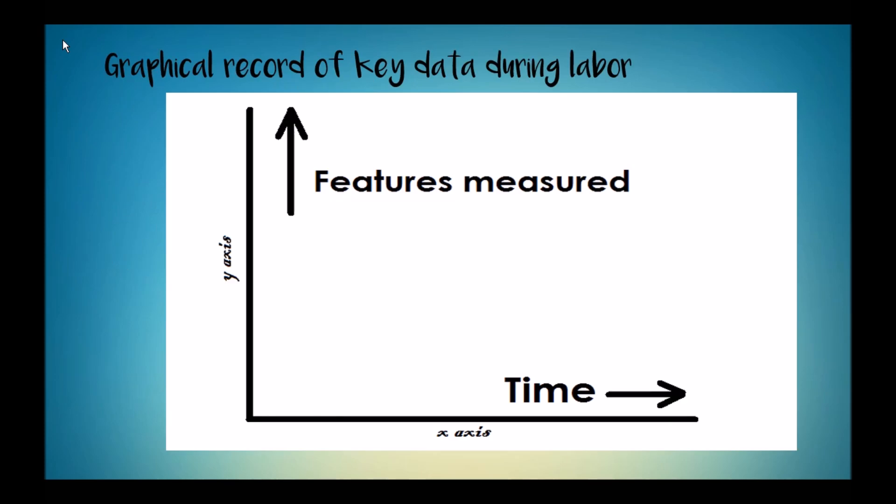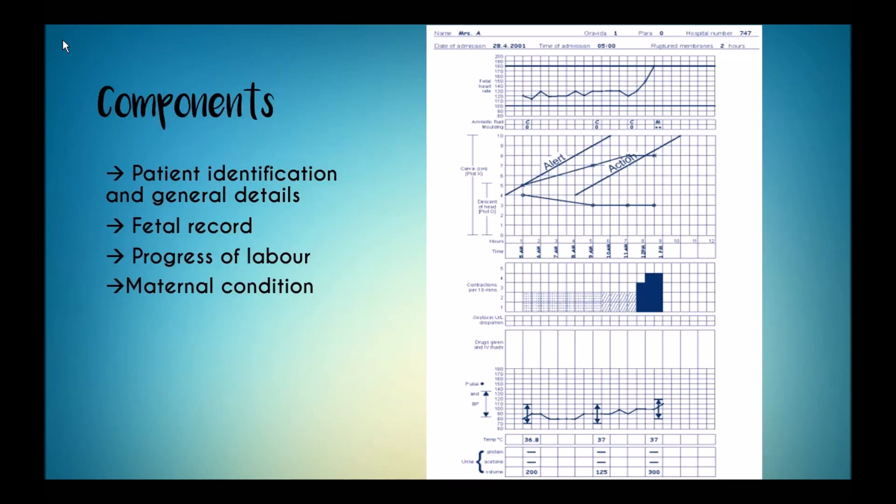All the key data during labor is plotted on the y-axis against time on the x-axis. The components of the partograph are patient identification and general details, fetal record, progress of labor, and maternal condition.